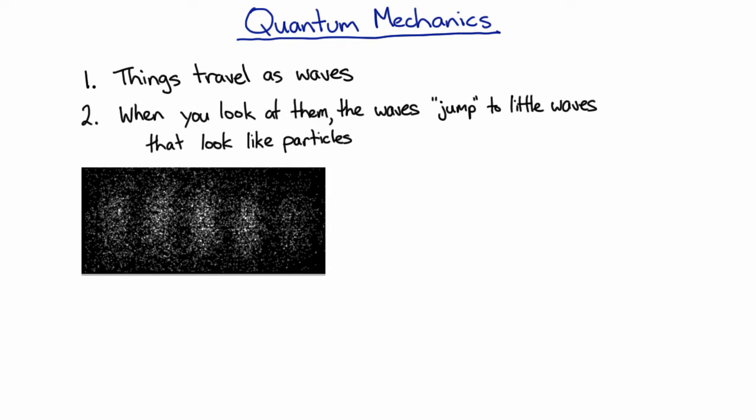And so quantum mechanics doesn't just describe electrons, it also describes light, and those little blobs are called photons. And in fact, absolutely everything in the universe seems to obey the laws of quantum mechanics.